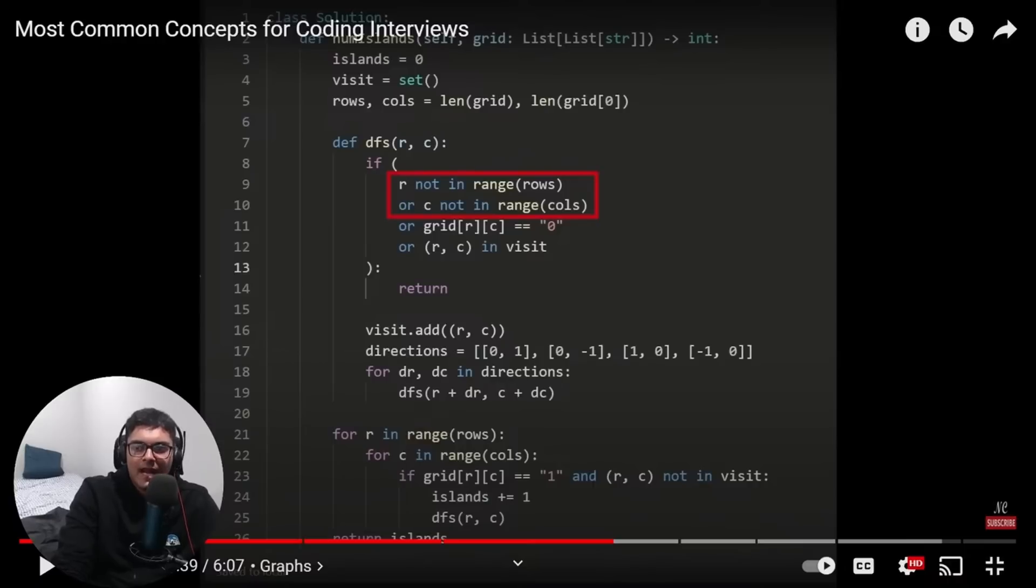That's the type of thing that I do when I was interviewing people. You can write out the code. Cool. You can write a DFS algorithm. Good for you. But if you can't tell me what's going to go wrong if I took these two lines of code out, then you really don't understand it. And I think that's fair.